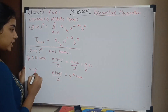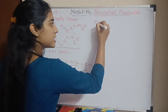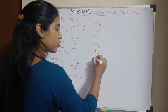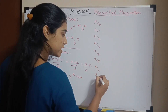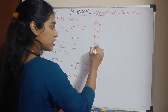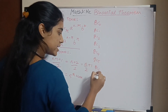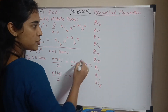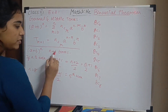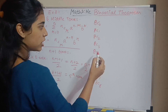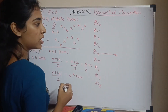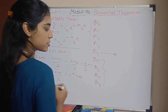When n is 8, the terms are 8C0, 8C1, 8C2, 8C3, 8C4, 8C5, 8C6, 8C7, 8C8 — that is 9 terms in total. The middle term is the 5th term, with 4 terms on each side. This confirms the formula for when n is even.